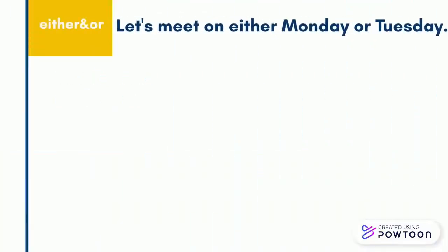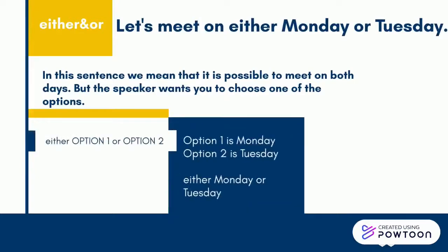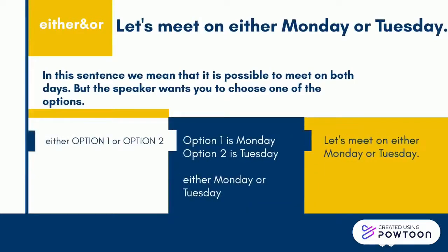Let's meet on either Monday or Tuesday. In this sentence we mean that it is possible to meet on both days, but the speaker wants you to choose one of the options. Option 1 is Monday. Option 2 is Tuesday. The result should be either Monday or Tuesday.